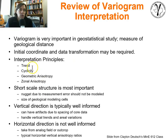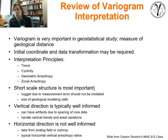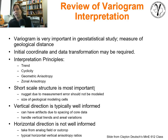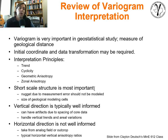The interpretation principles we covered are trend, cyclicity, geometric anisotropy, and zonal anisotropy. As we go into variogram modeling, keep in mind that short-scale structure is often most important — a lot of the action happens at short scales. We have to make predictions near wells where we have very few data at short distances. We also have to be cognizant of model cell size, because we cannot capture structures below model resolution.